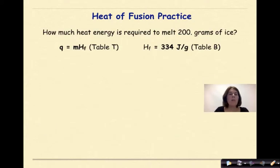Let's do a practice problem. How much heat energy is required to melt 200 grams of ice? We're going to use the formula q equals mHf, which is the heat of fusion found on reference table T. And we're going to use the heat of fusion value found on table B, which is 334 joules per one gram of water. So we're going to rewrite our formula q equals mHf. We're going to substitute in our values. Our mass is 200 grams of ice. We're going to multiply that times our heat of fusion, which is 334 joules per gram. We'll notice here that grams cancel grams, so we're left with joules, which is what we want.